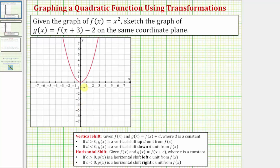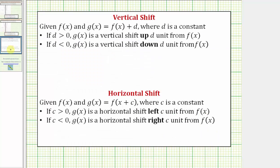Before we do this, let's review vertical and horizontal shifts of a function. Let's first talk about a vertical shift. Given f of x and g of x equals f of x plus d, where d is a constant, then if d is greater than zero or positive, then g of x is a vertical shift up d units from f of x. And if d is less than zero or negative, then g of x is a vertical shift down d units from f of x.